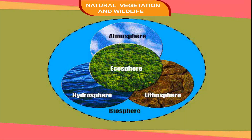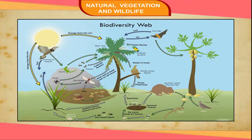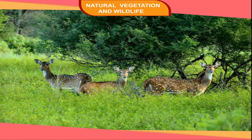Our biosphere has a great variety of living things, from microscopic bacteria to huge plants and animals. Scientists have identified about 1.7 million organisms. This great diversity of life is called biodiversity. To support life in different surroundings, nature has a system which ensures that living things get everything they need to survive from their surroundings.